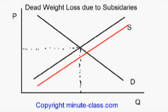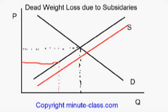Why does this happen? Consider this: if we are going to produce the nth product, before there is any subsidy, the marginal cost of this product will be at this level. This is because the supply curve actually represents the marginal cost of producing the nth product. But now, due to the government subsidy, the government is going to pay for this amount, so the producer only has to pay for this remaining amount.